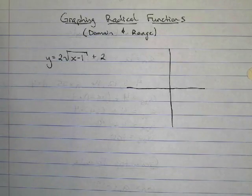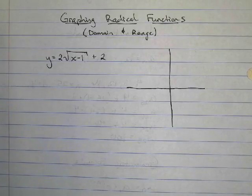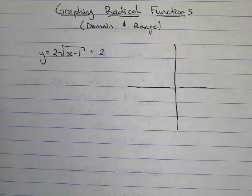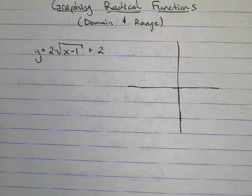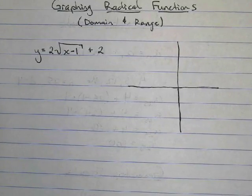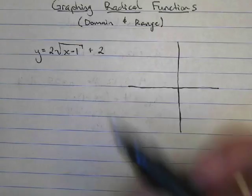To graph this function — y equals 2 times the square root of x minus 1 plus 2 — what I want to do is set the radicand, that's the piece underneath the radical, equal to my 4 special numbers to help me find some values.